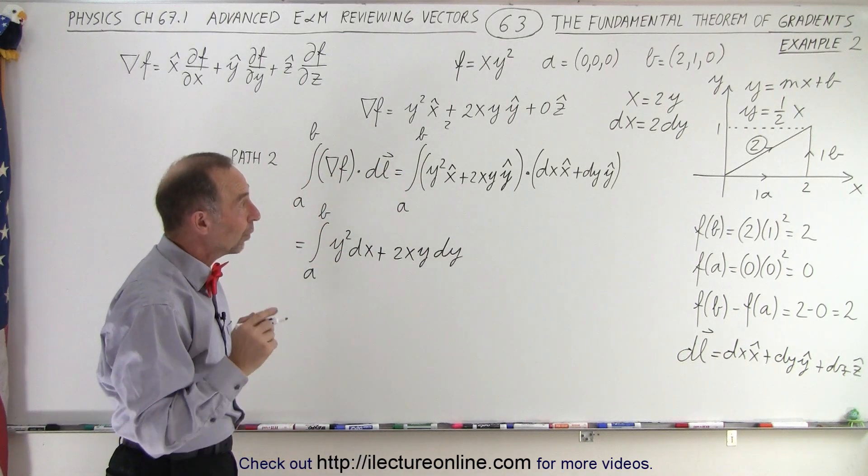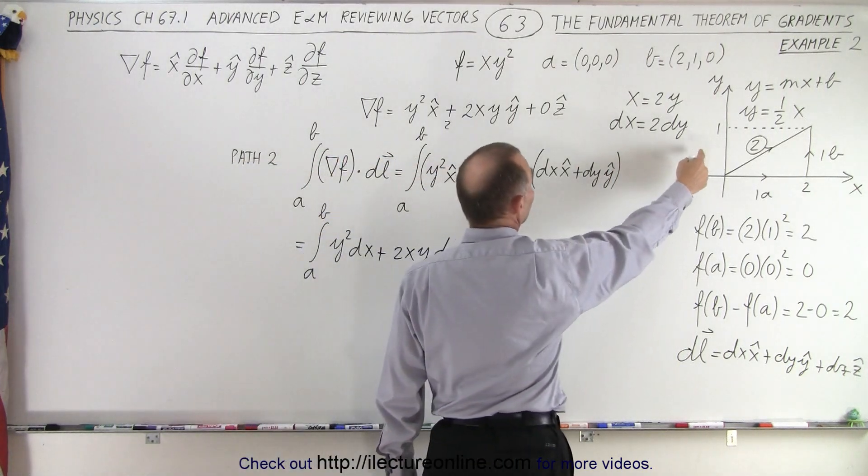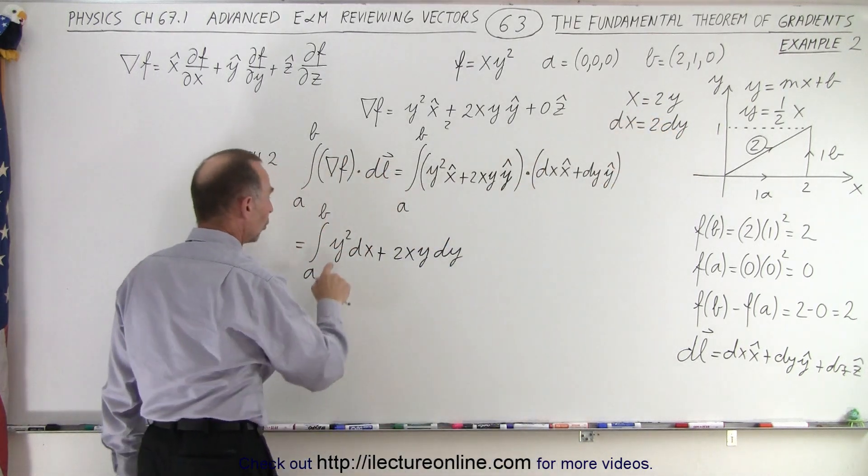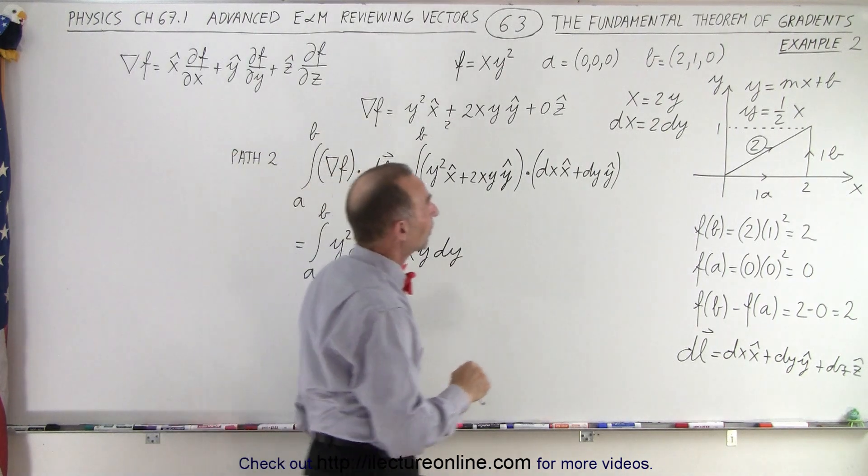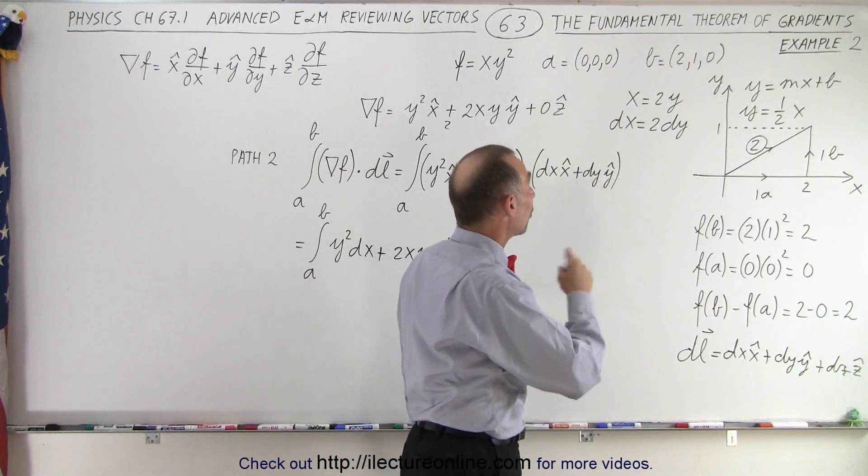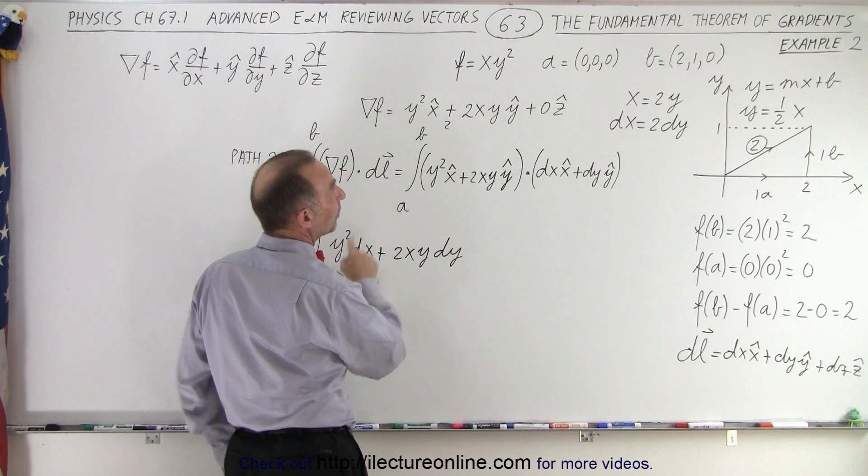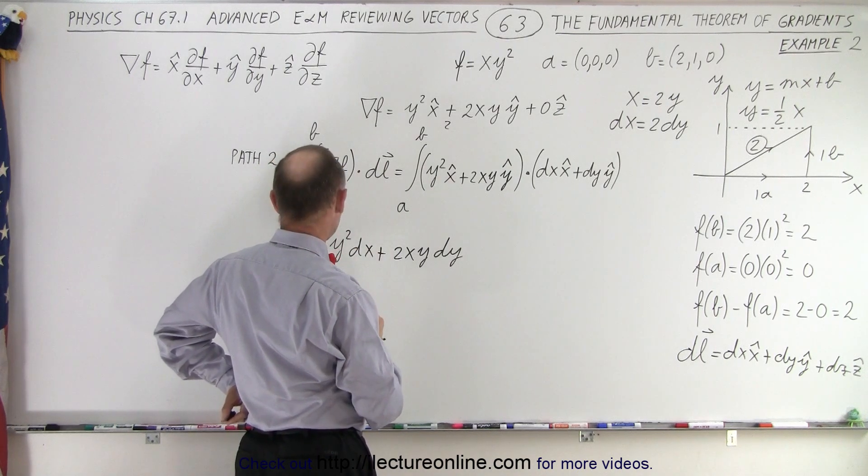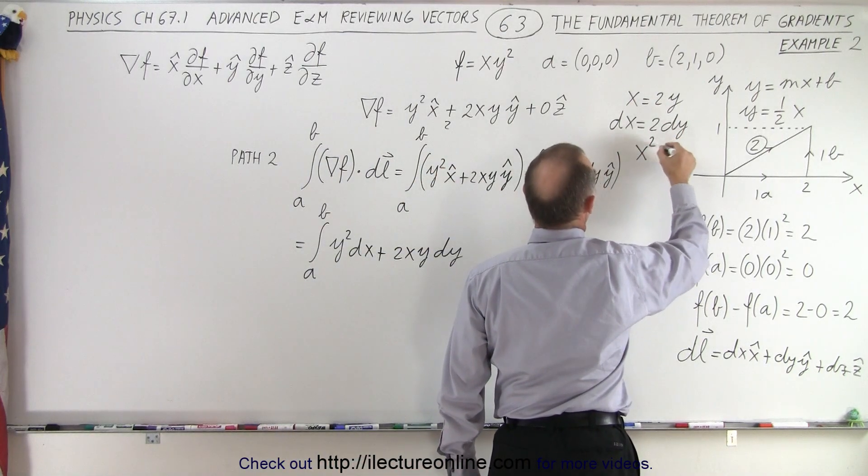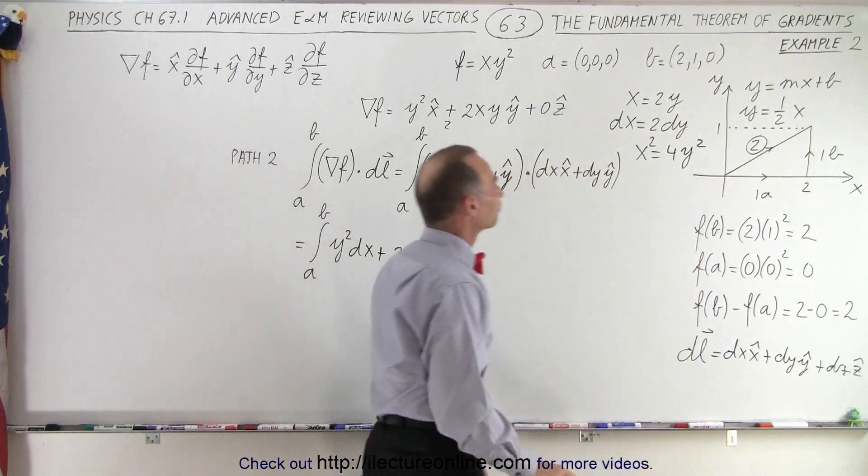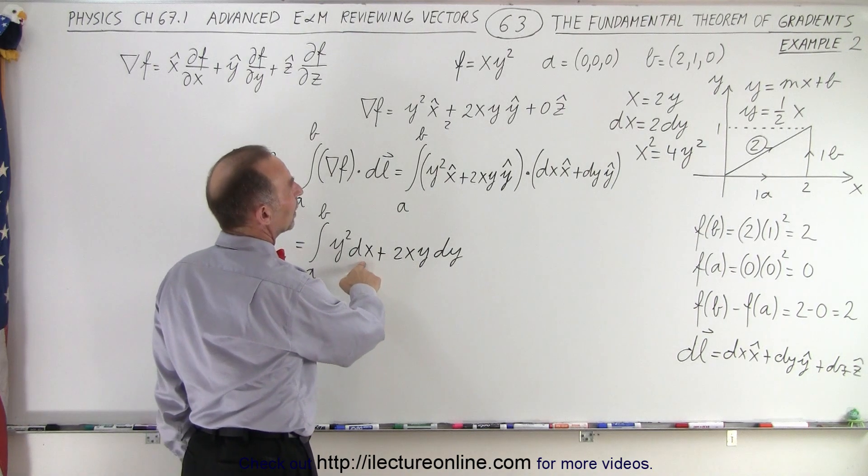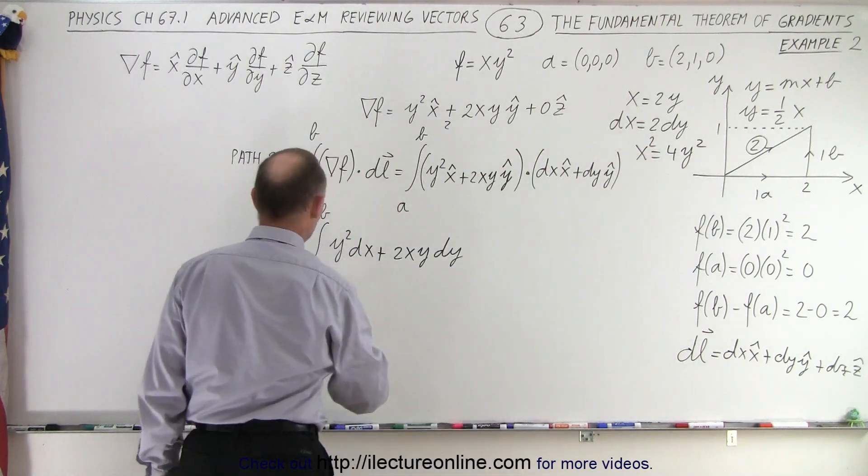That means x is changing twice as fast as y is. So what I can do is I can make a change. If I square both sides I get x squared equals 4y squared, so I'll keep the y squared. I think it's easier just to eliminate x.